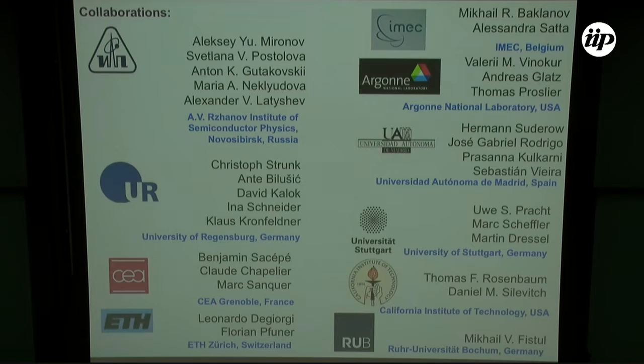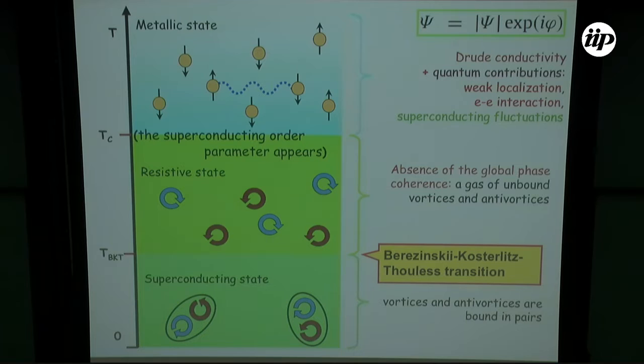This is exactly a slide which was the first slide two years ago when I explained what's this Berezinskii-Kosterlitz-Thouless transition in thin films. The specific of two-dimensionality is that superconducting order parameter appears not at one temperature but this transition really goes like in two stages.